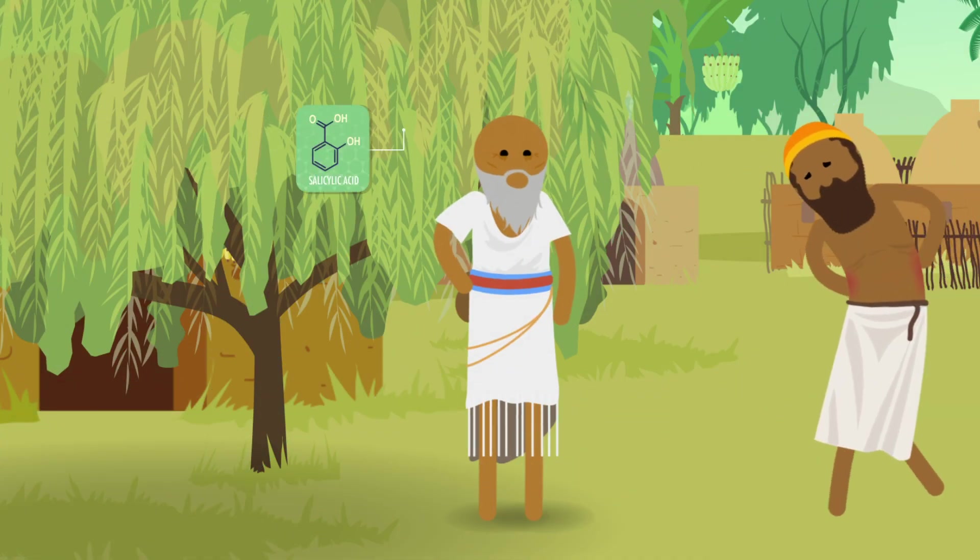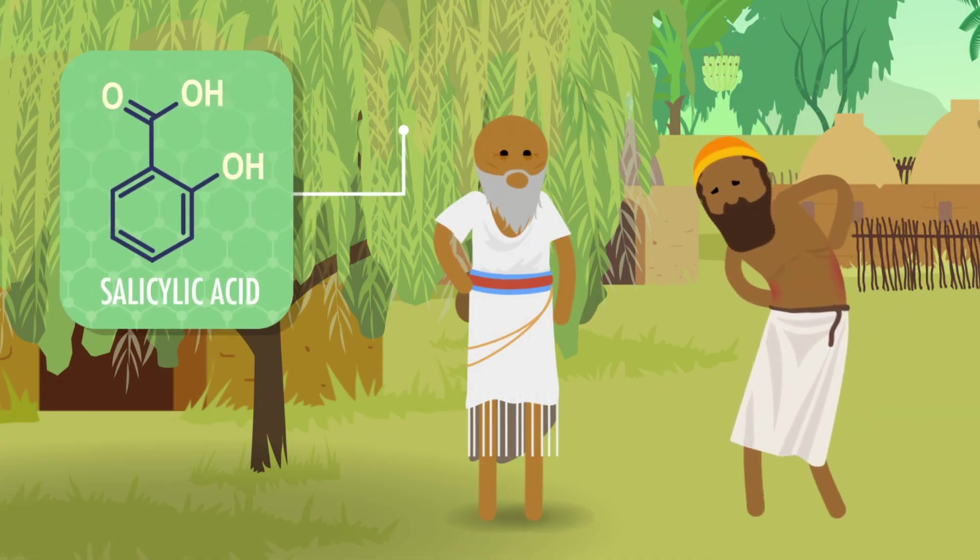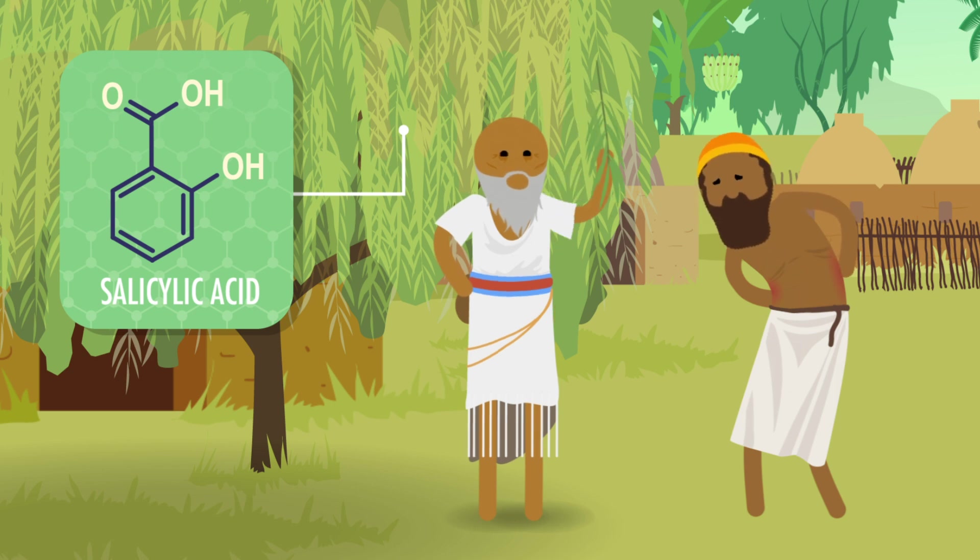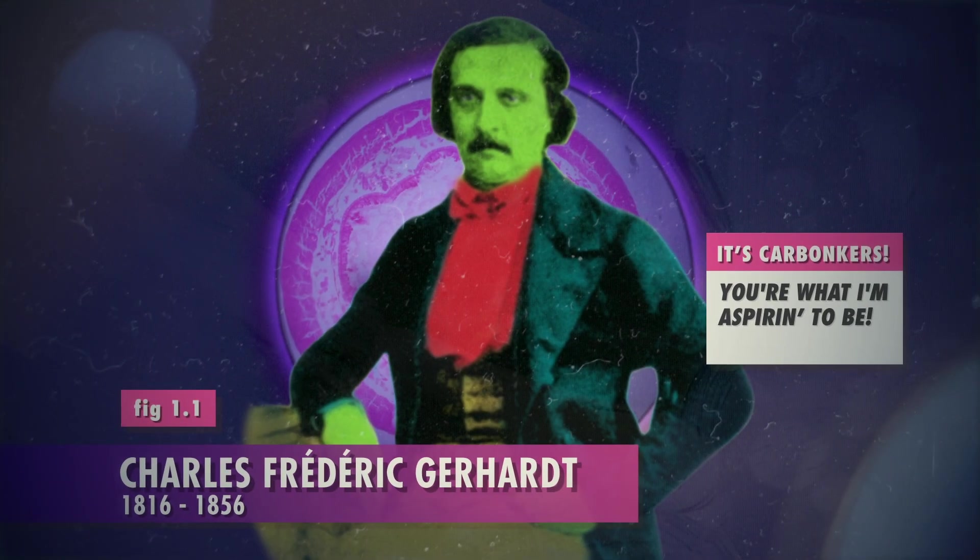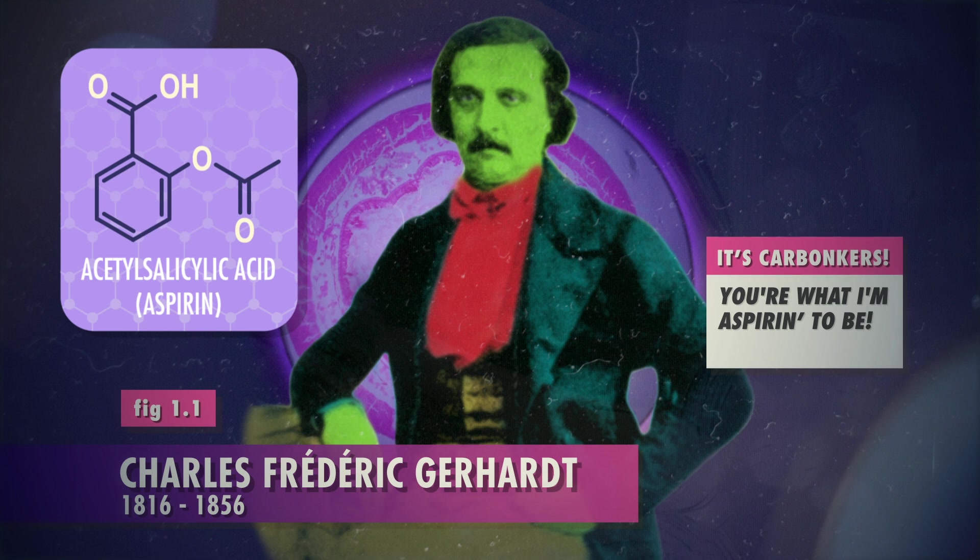For example, willow leaves contain salicylic acid that acts as a plant hormone, and as far back as 4000 BCE, the Assyrians used this extract to treat joint pain in humans. Natural products like salicylic acid can be medicines themselves, or they can be inspiration for more effective treatments. Like in 1853, French chemist Charles Frédéric Gerhardt synthesized a similar compound, acetylsalicylic acid, which we know today as aspirin.